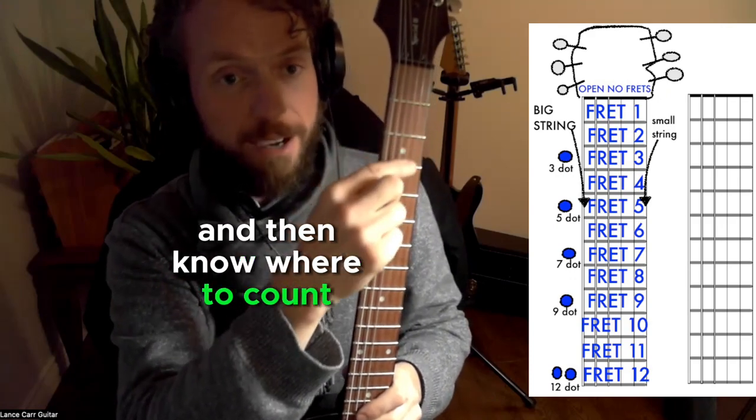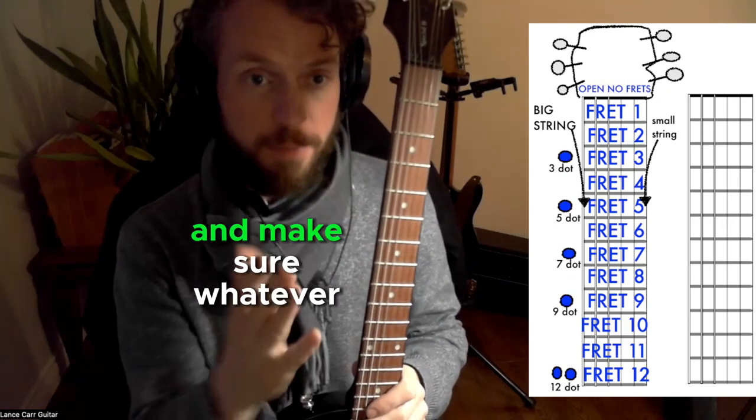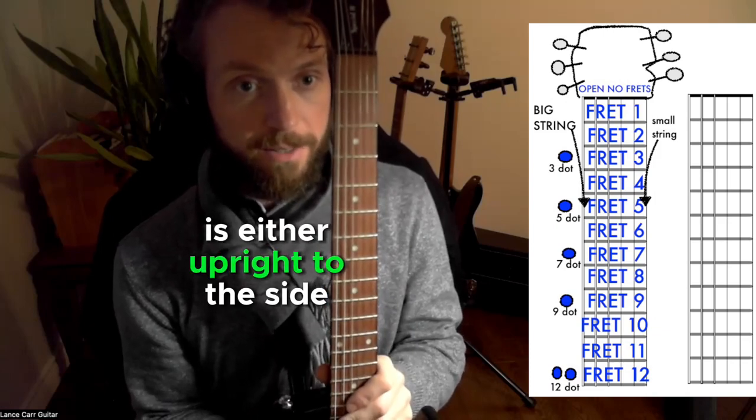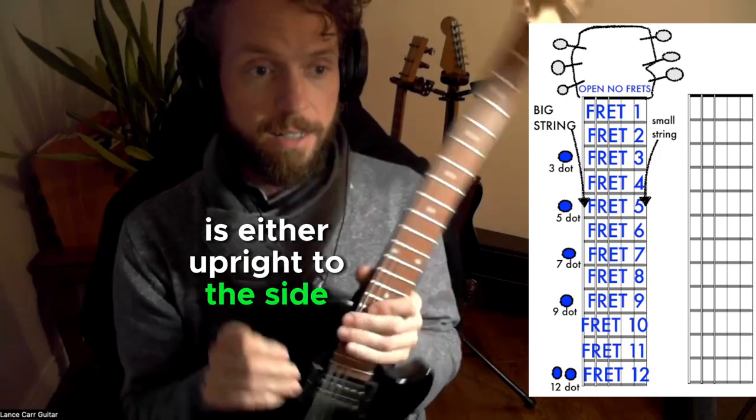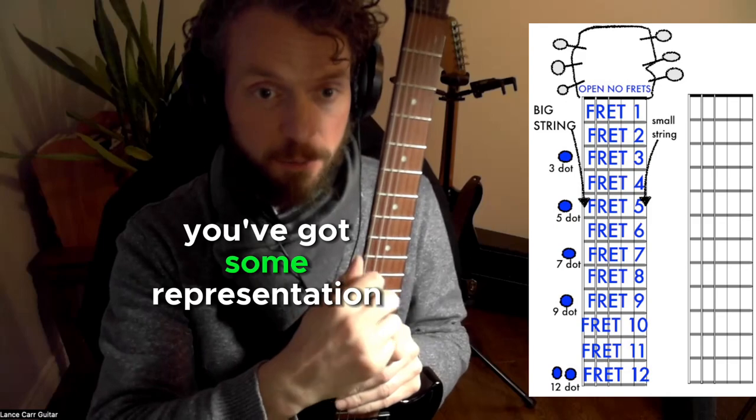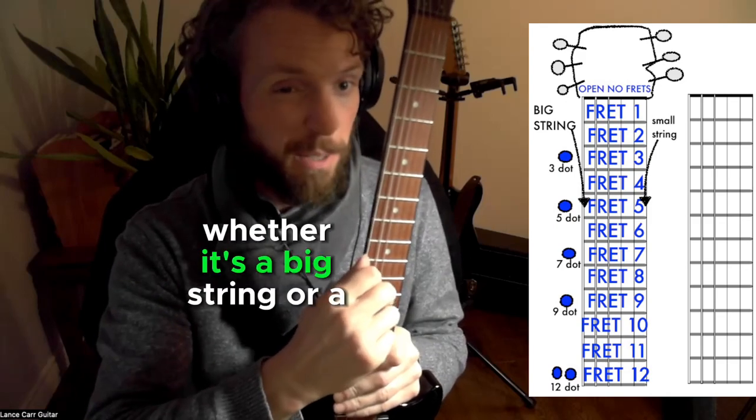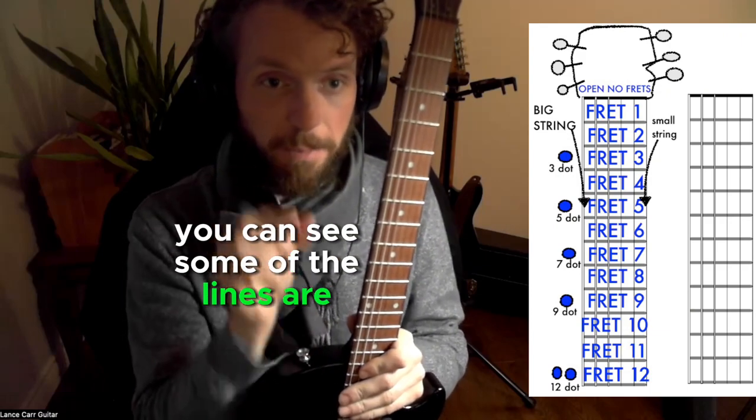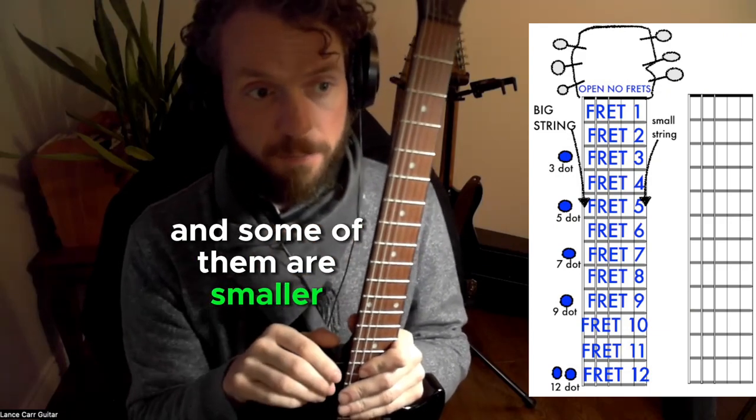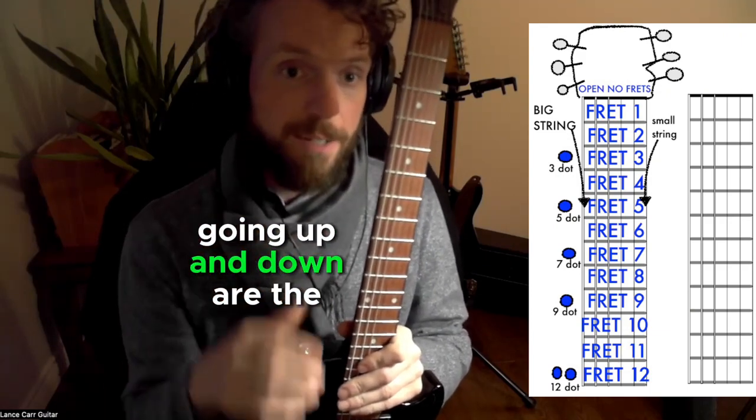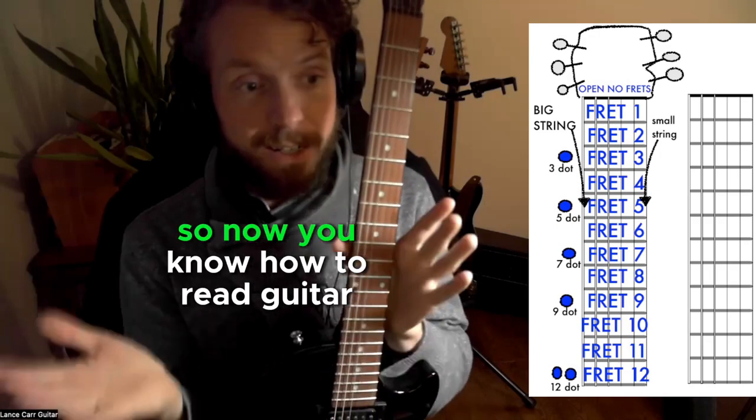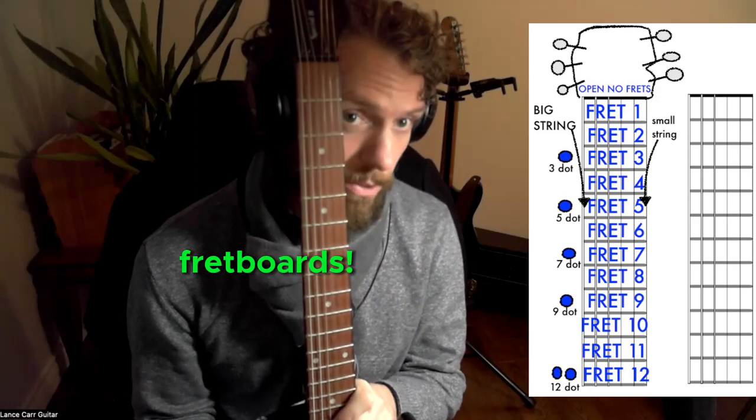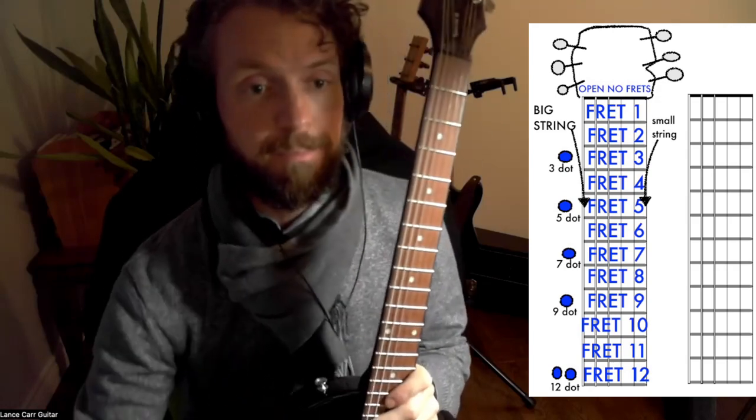And then know where to count all the metal frets. And make sure whatever fretboard chart you're reading is either upright or to the side. And hopefully you've got some representation to try and tell you whether it's a big string or a small string. If you look at the picture here, you can see some of the lines are bigger and some of them are smaller. So those are the lines going up and down are the strings. So now you know how to read guitar fretboards. Let's have fun.